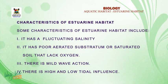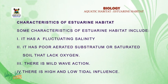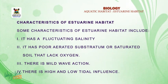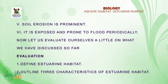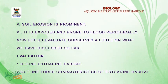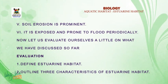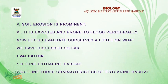Three, there is mild wave action — the wave action that occurs there is mild. Four, there is high and low tidal influence. Five, soil erosion is prominent in estuarine habitats. Six, it is exposed and prone to flooding periodically.